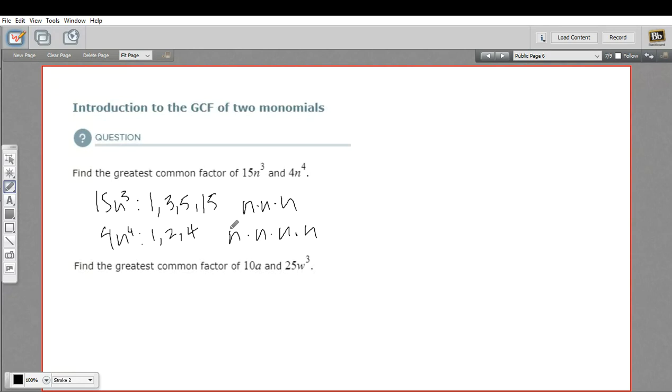Once you've got all the factors listed out, what you do is figure out what they have in common. What's the biggest part they have in common? For the numbers, there's not a lot going on here. The biggest number they have in common is actually the number 1. So that's our number part. For the n's, we've got 3 n's here. We've also got 3 n's here. So they have 3 n's in common.